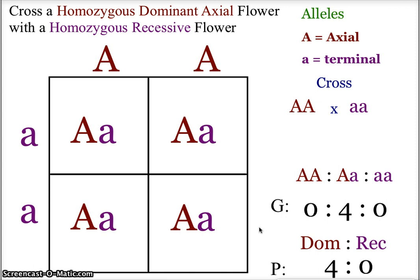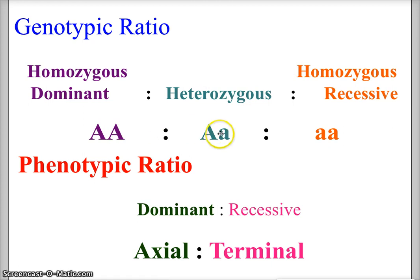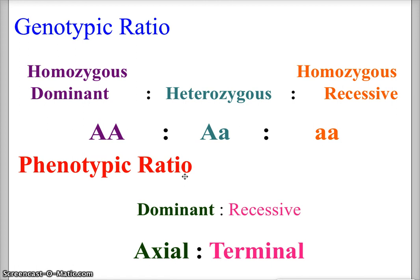To summarize: there are two ratios we work with. The genotypic ratio always follows the order homozygous dominant, heterozygous, homozygous recessive — AA, Aa, aa — always in this order. The phenotypic ratio is always dominant first, recessive second. In the case of our example, that is axial to terminal.